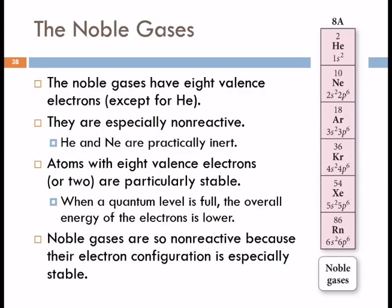Let's look at the noble gases. These guys are all in the same group, so they have similar chemical and physical properties. All of these noble gases have eight valence electrons except for helium.